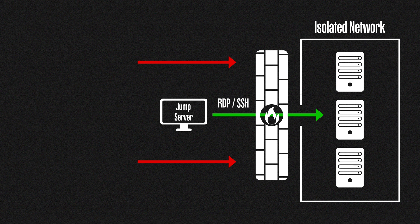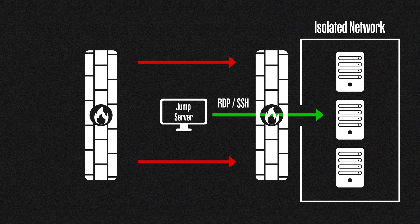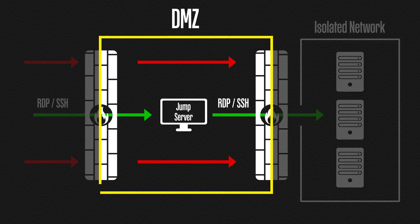Now we have our jump server with direct access to the isolated network. But our jump server is currently sitting wide open to the public internet, so we want to put another firewall in front of it. Again, to keep everything as secure as possible, we lock down access to the jump server to only the protocols we need — either RDP or SSH. Everything else is blocked. Our jump server is now in something called a DMZ, or Demilitarized Zone. A DMZ is an isolated area of a network where security rules are more relaxed to allow public access.